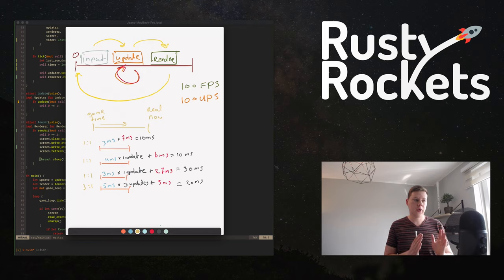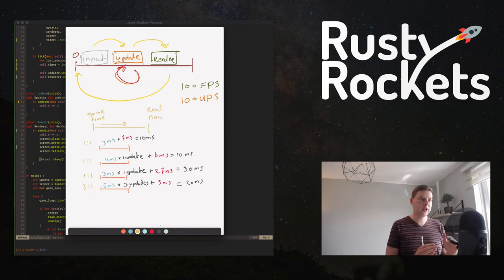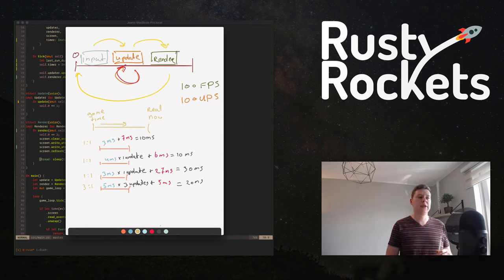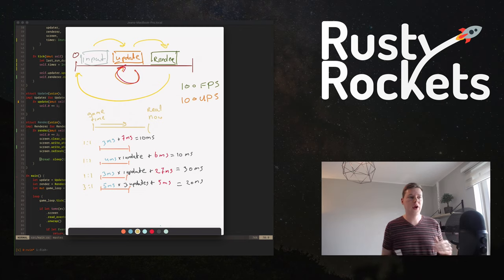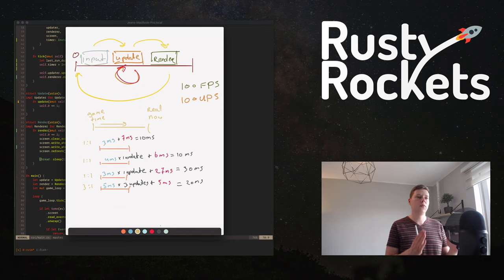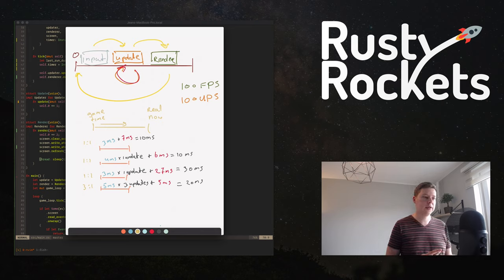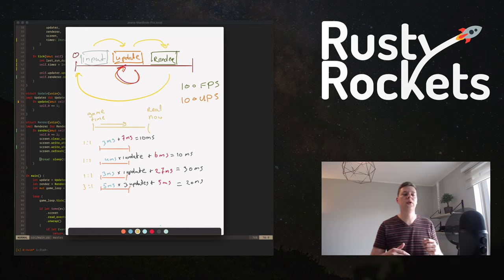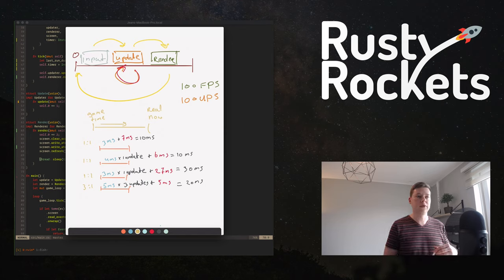That's where you decouple updating from rendering. Rendering goes down if you need more performance to hit your updates-per-second goal. But the updates will always increment by 10 milliseconds — it will always stay at 100 updates per second. If you have a powerful machine, rendering could be 100 or 150 FPS. If you have a less powerful machine, we just make sure updating is happening as it should and rendering can go a bit lower. Even if something is running in the background, updating continues and rendering will eventually return to its stable frame rate.